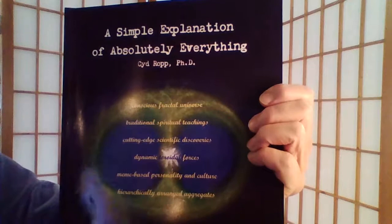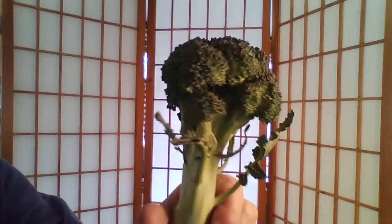Hi, this is Syd Ropp and I'm explaining to you today about fractals from my book A Simple Explanation of Absolutely Everything. We're going to talk about fractals using an ordinary stalk of broccoli.